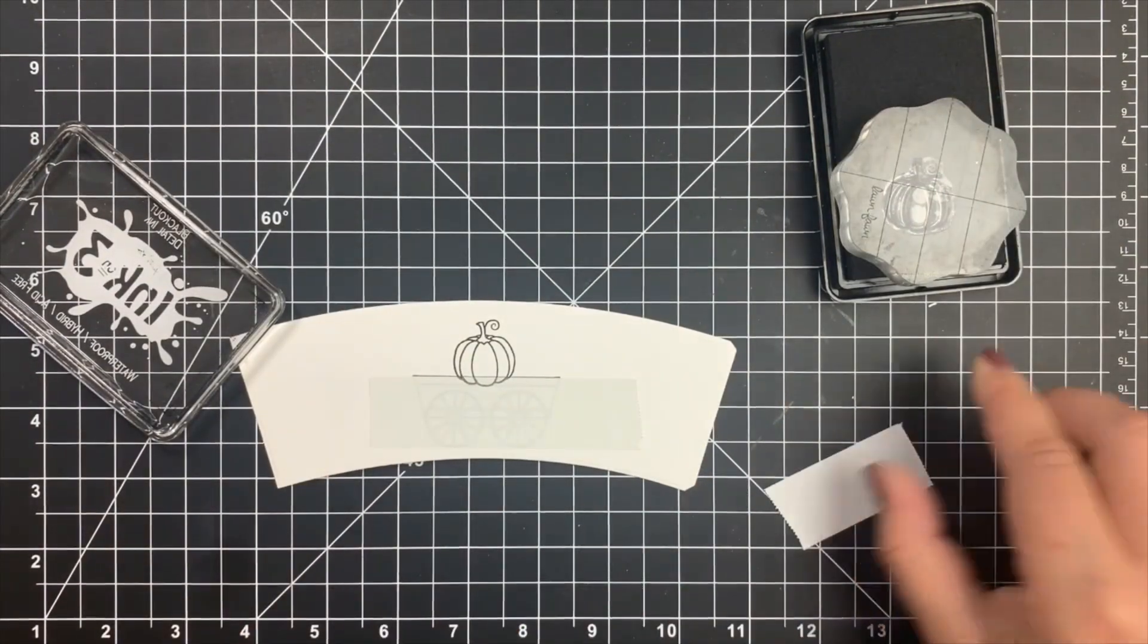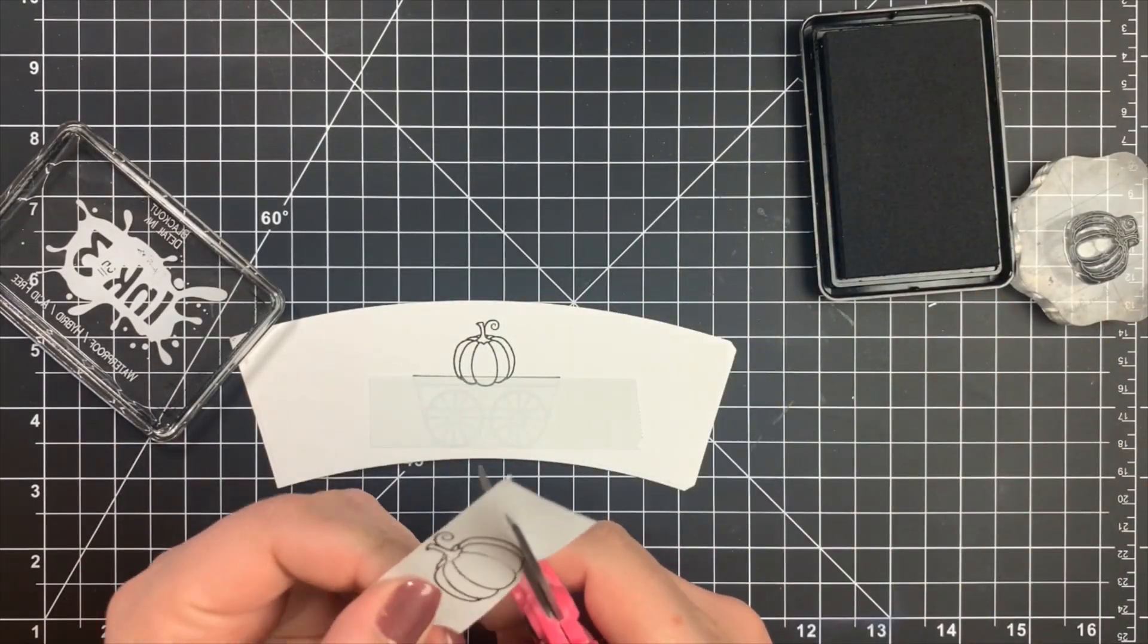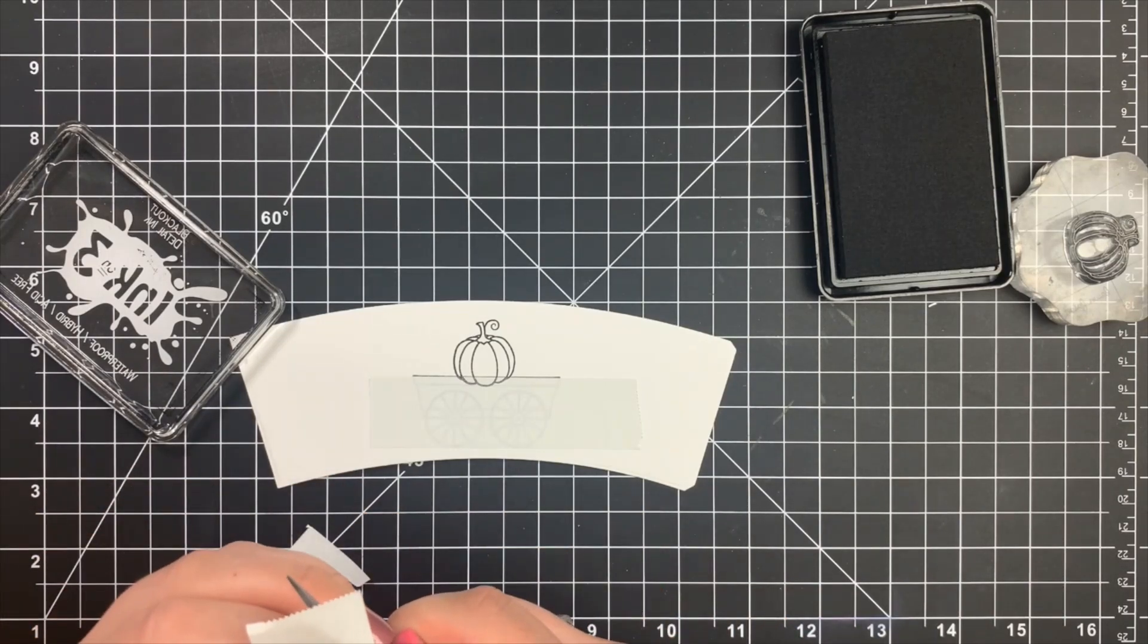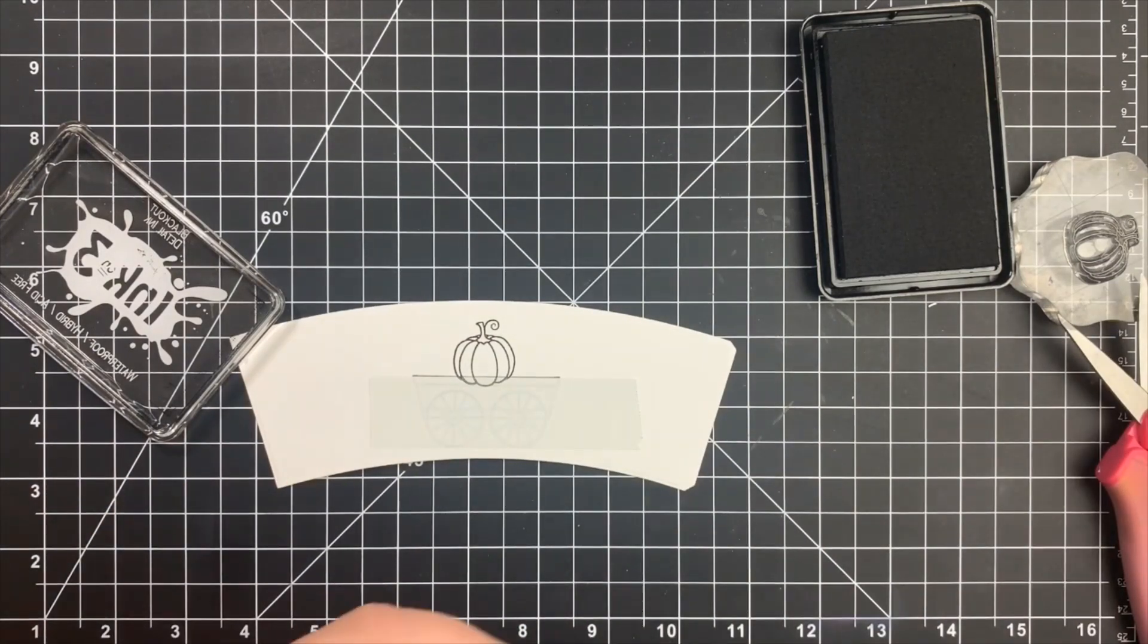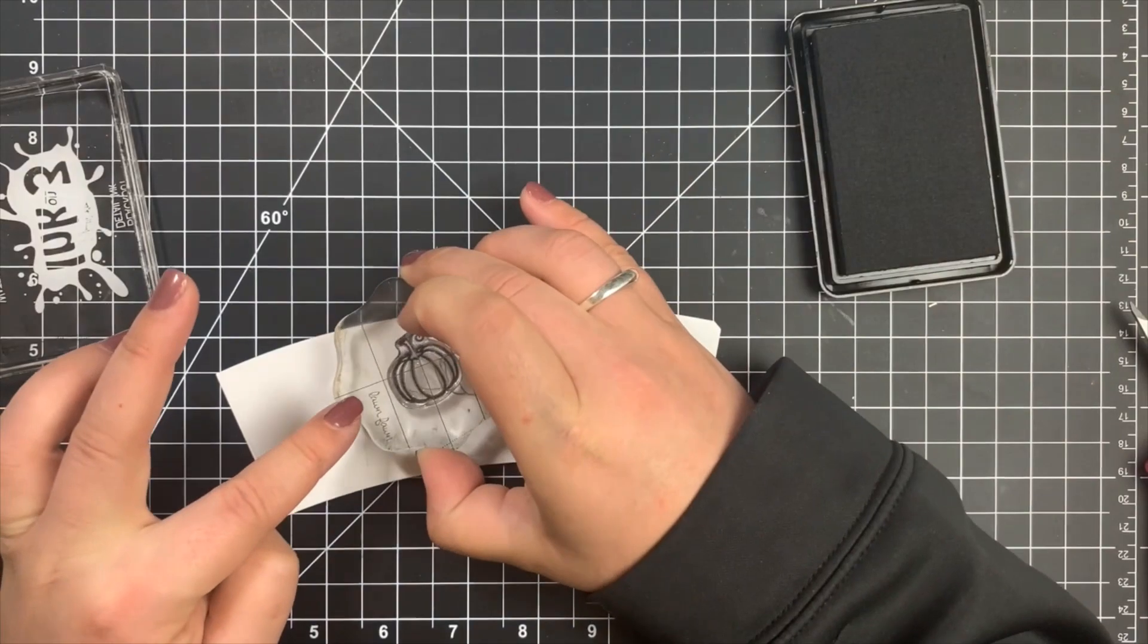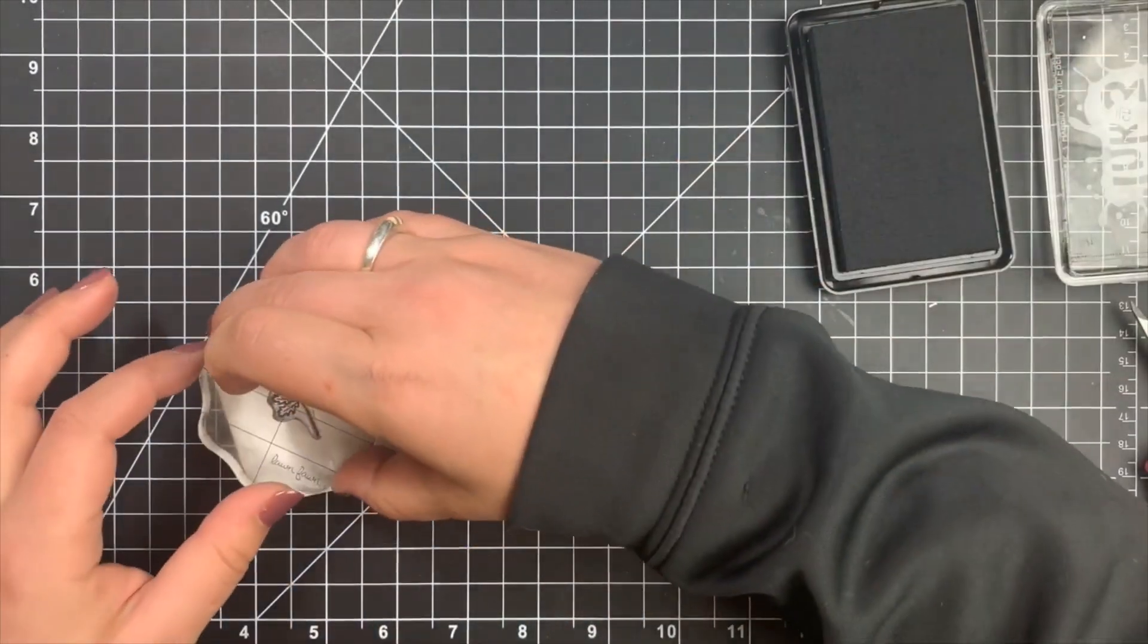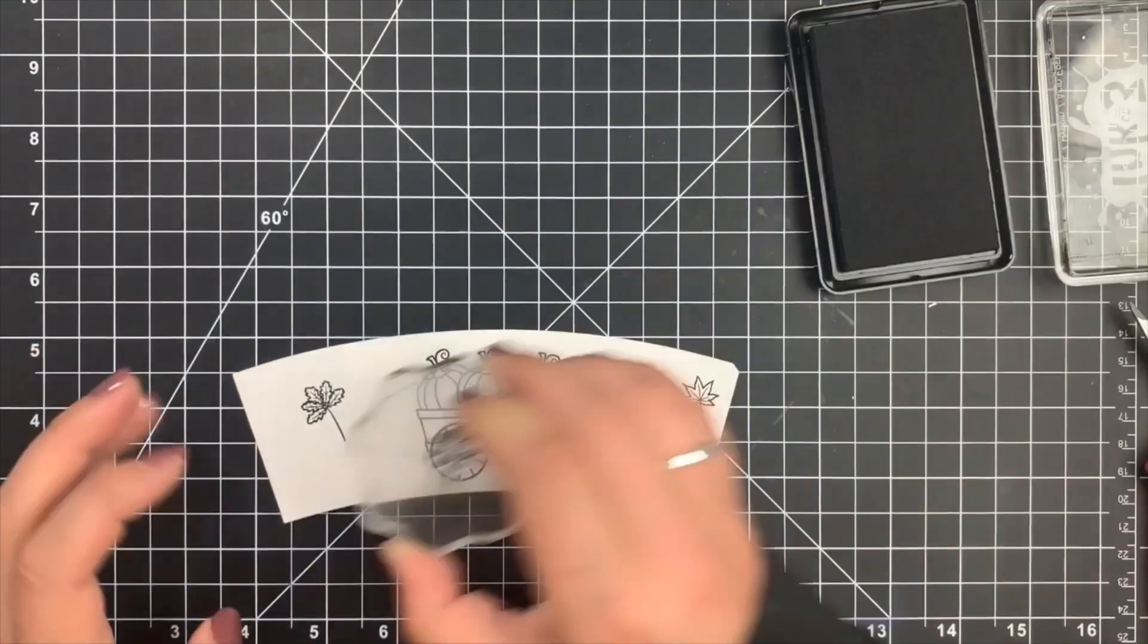Take another piece of the post-it note tape, and I'm just going to cut this out really quickly. I'm not really worried about it being perfect. I just want to mask off that center pumpkin so that I can stamp two pumpkins on either side of that coming out of that little wagon. So once that was stamped out, I am going to go ahead and add some leaves off to the side. There's little tiny leaves, all different shapes and sizes in this stamp set. And I'm just going to scatter these around as if we have some falling leaves in the background.